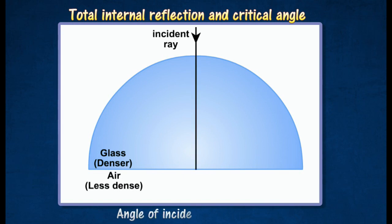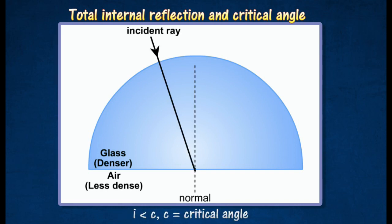When the angle of incidence is zero at the glass-air boundary, the ray emerges without deviation. When the light ray is inclined at an angle of incidence i, it is bent away from the normal since it is traveling from a denser to a less dense medium.